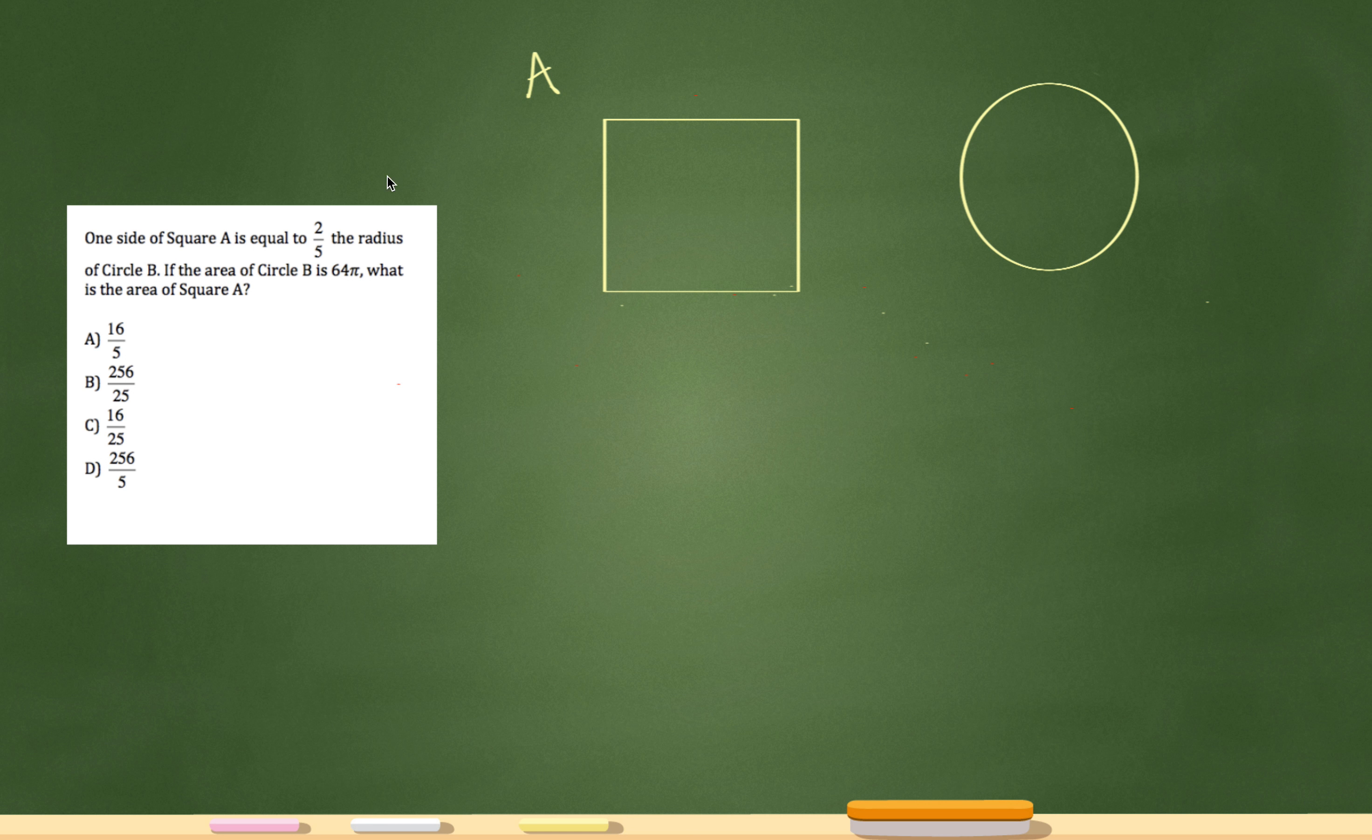One side of square A is equal to two-fifths of the radius of circle B. If the area of circle B is 64 pi, what is the area of square A?